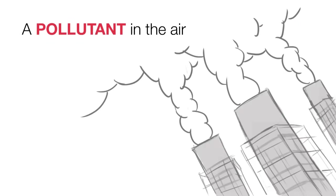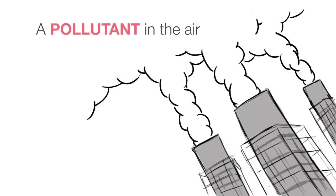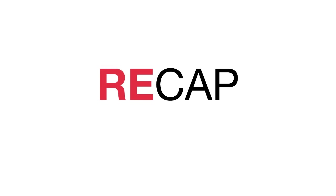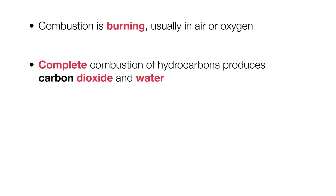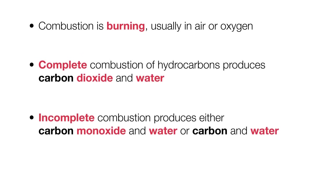Unburnt carbon is a particulate and is a pollutant in the air. So to recap: combustion is burning, usually in air or oxygen. Complete combustion of hydrocarbons produces carbon dioxide and water. Incomplete combustion produces either carbon monoxide and water, or carbon and water. And the products of combustion have various effects.